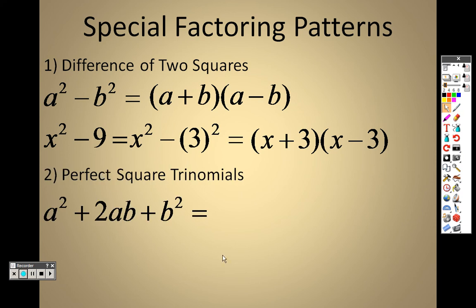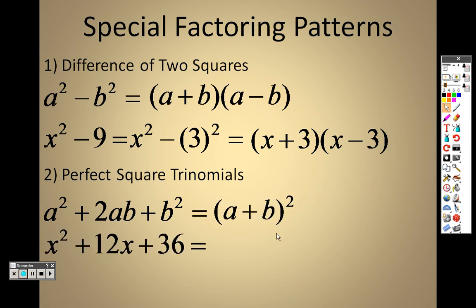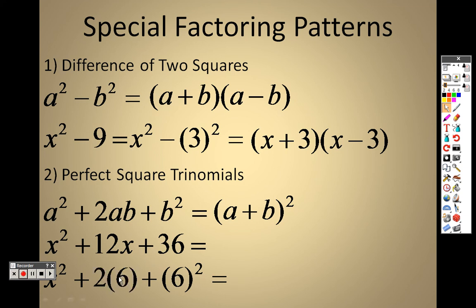Perfect square trinomial: if you have a² plus 2ab plus b², you can rewrite that as (a plus b)². So if x² plus 12x plus 36 — x is squared, 36 is 6 squared, and 2 times 6 equals 12 — then a is x and b is 6, so you can rewrite that as (x plus 6)².